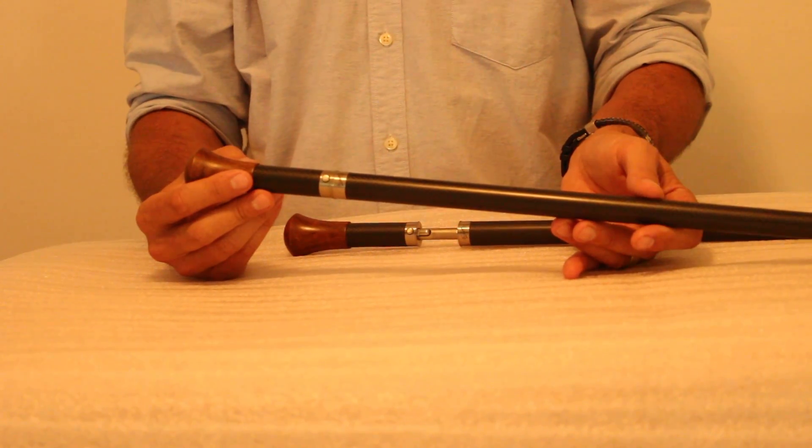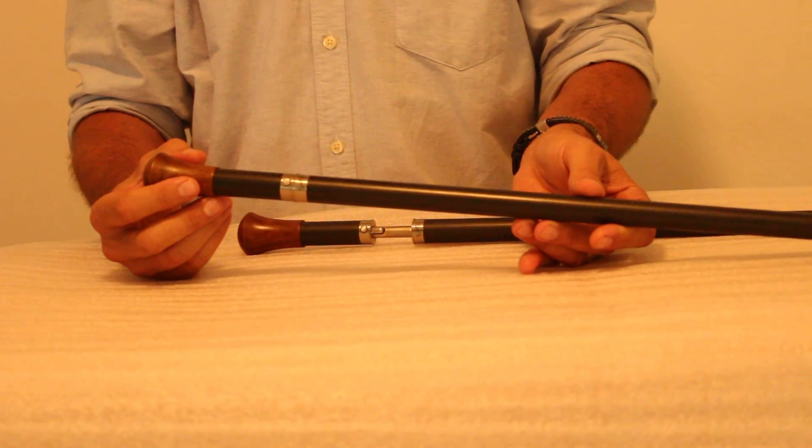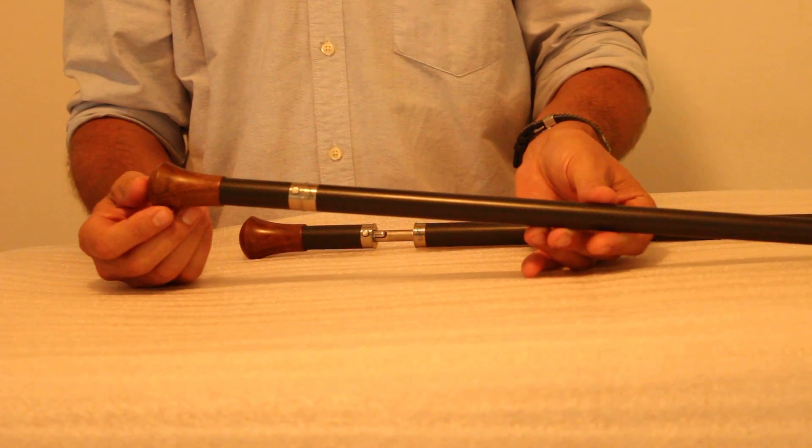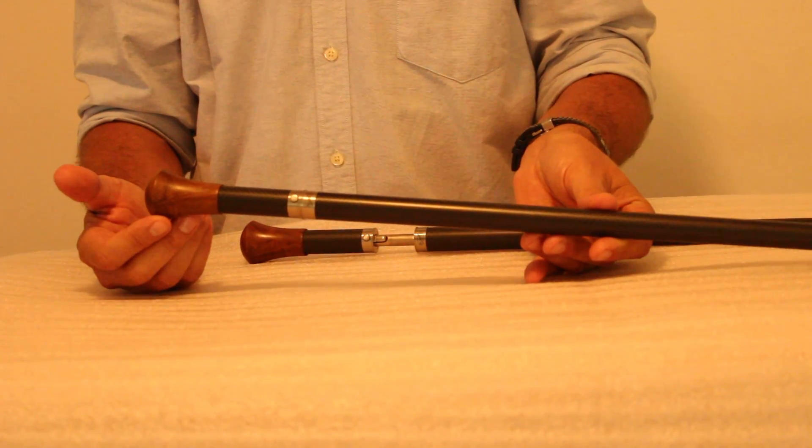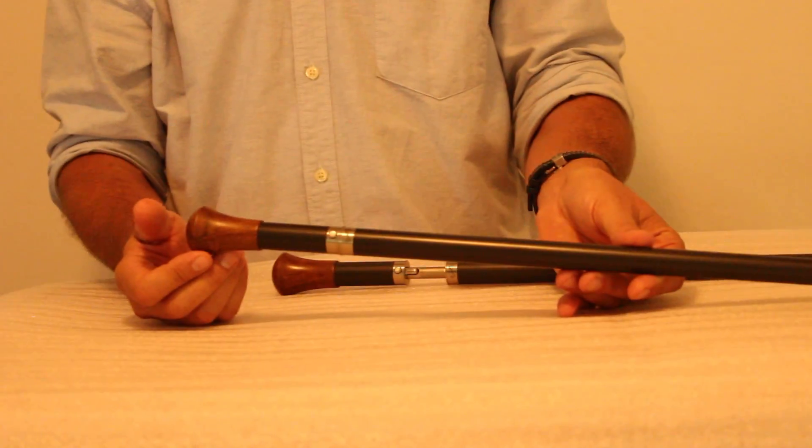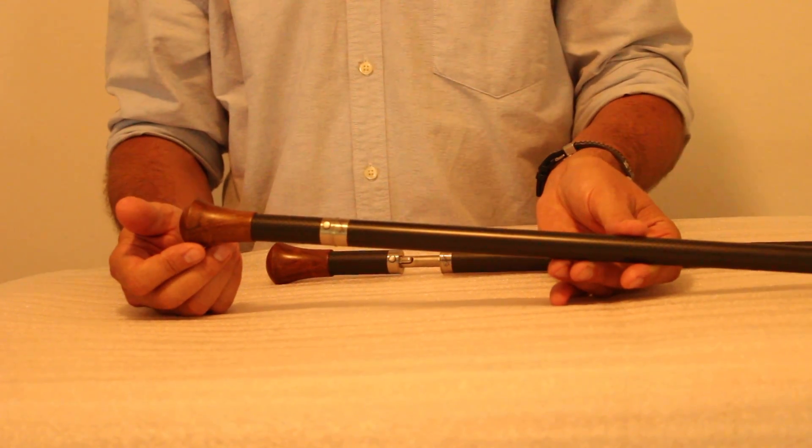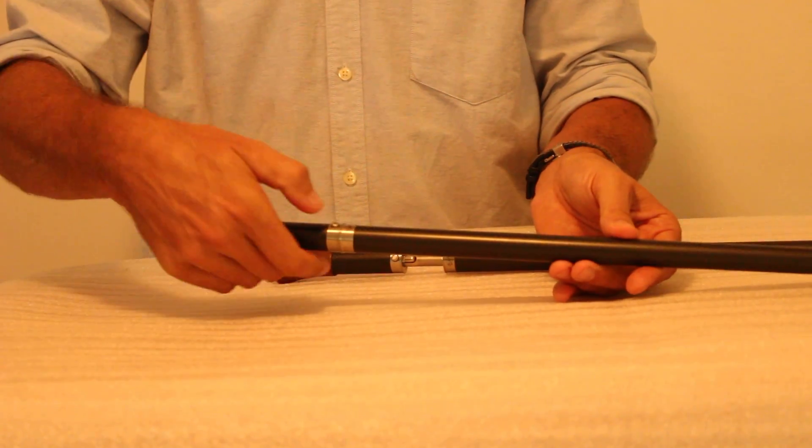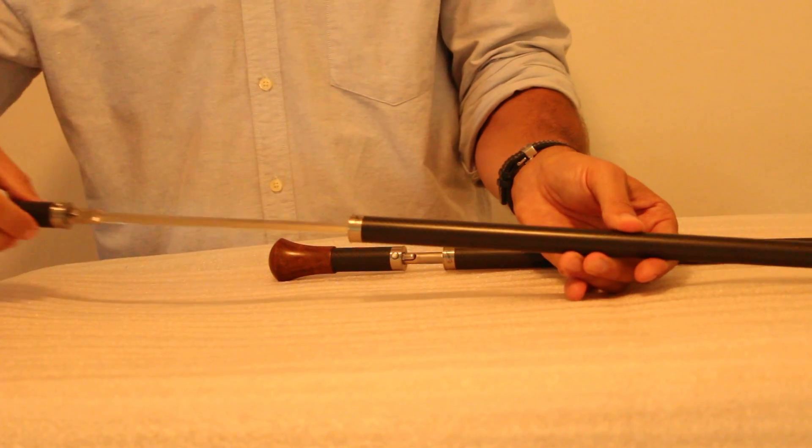Hi guys, welcome to Burger Custom Canes. In this video I'm giving you a short review of a very popular Mark 2 model. The main difference between the Mark 1 and Mark 2 is the internal rapier style blade.